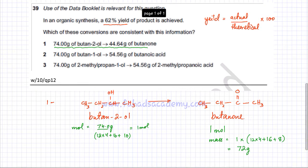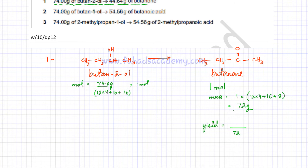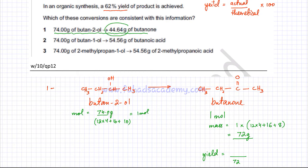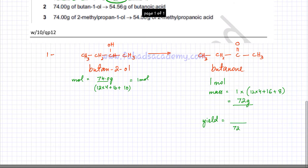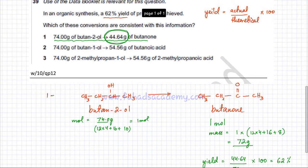The theoretical output from calculations is 72 grams. Now to find yield: yield = actual ÷ theoretical × 100. The actual mass given in the question is 44.64 grams. So yield = 44.64 ÷ 72 × 100, which comes out to exactly 62%. So the first option is correct and has a yield of 62%.